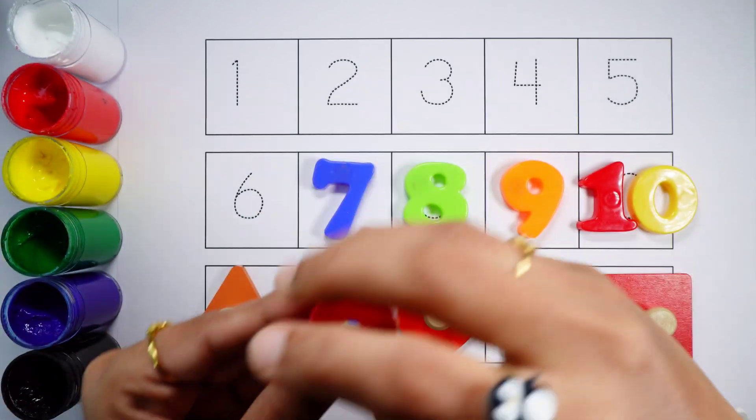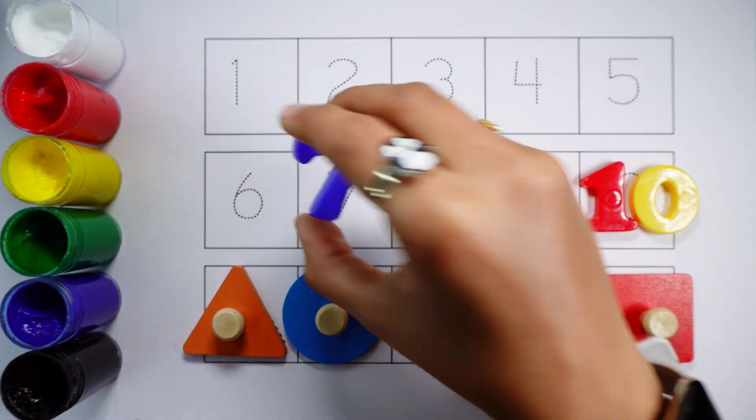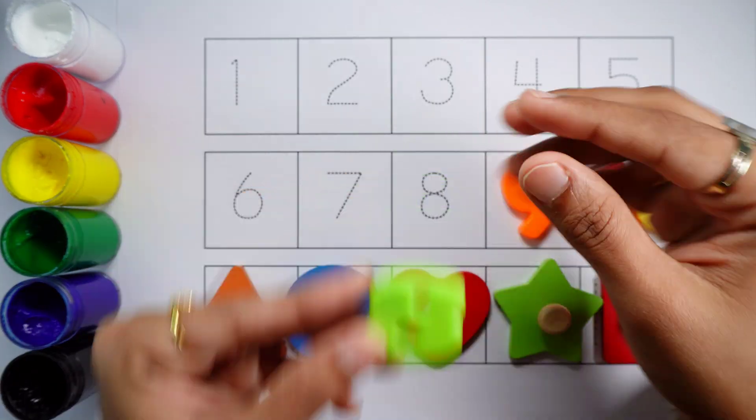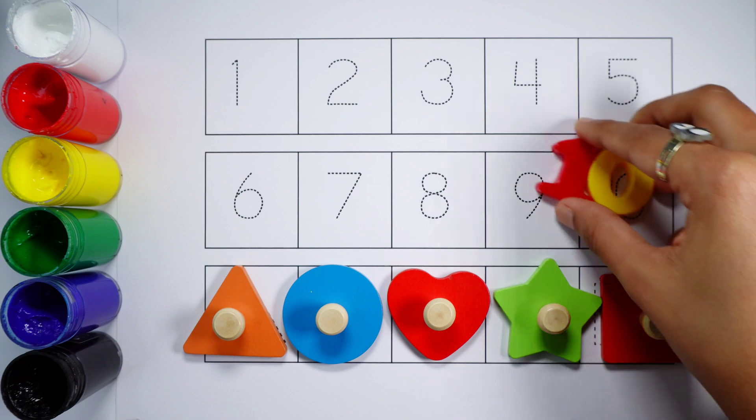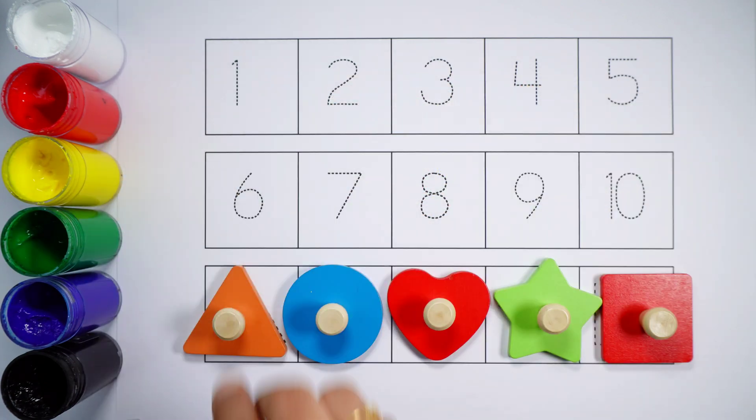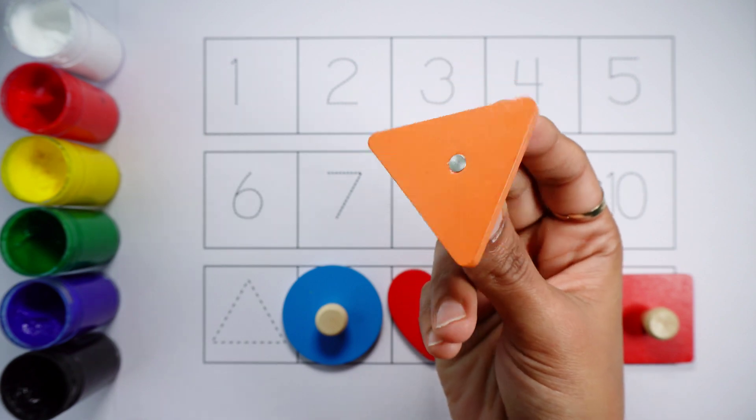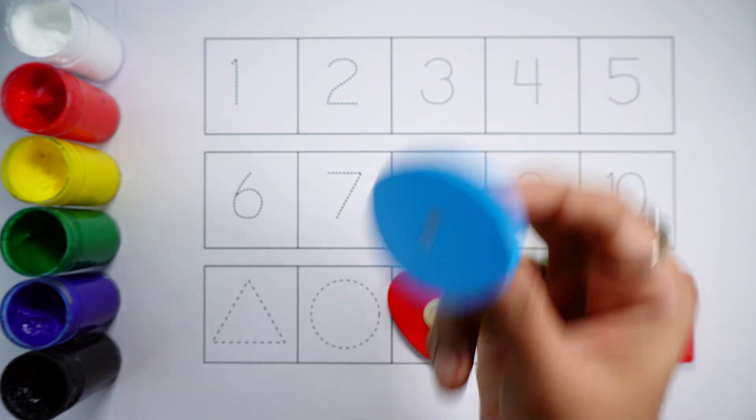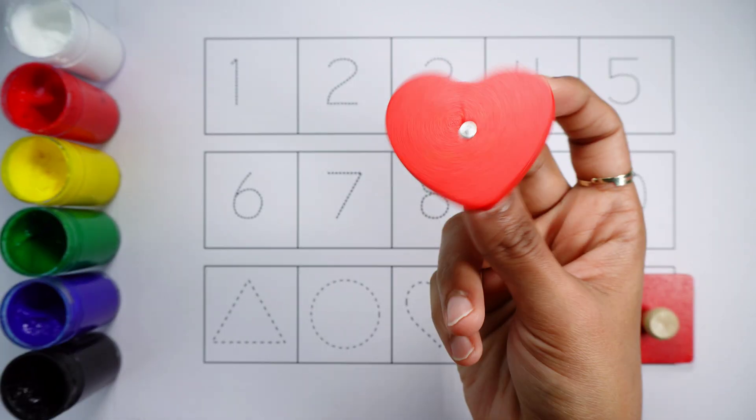Number six, number seven, number eight, number nine, number ten. Triangle, an orange triangle. Circle, a blue circle. Heart, a...